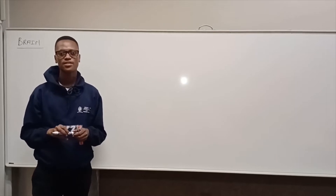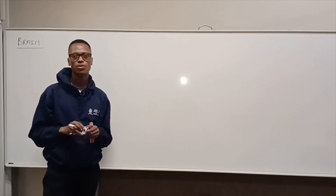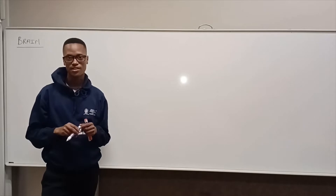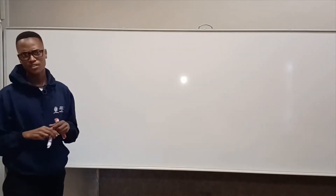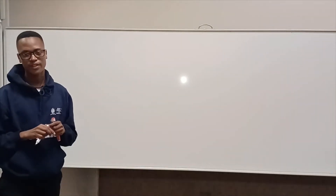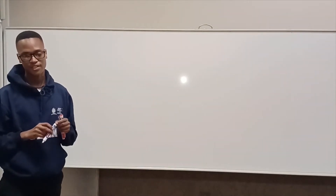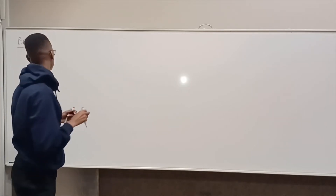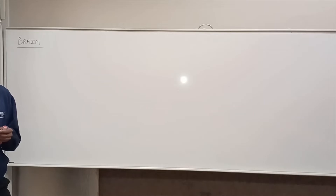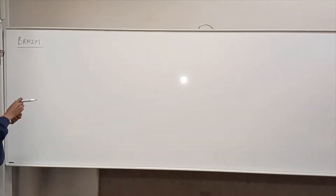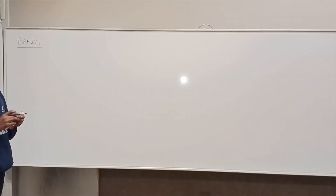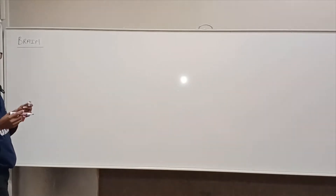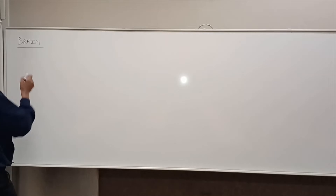Welcome again. In a previous video we covered the introduction to the nervous system. Now we are going to talk about the brain. The brain is part of the central nervous system and is one of its key components. It is very important to know the different parts of the brain, so here we are going to focus on the human brain and draw a sketch of the top view.